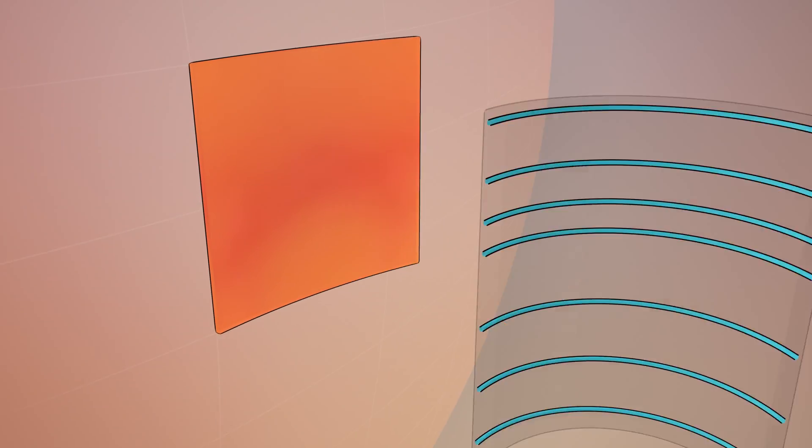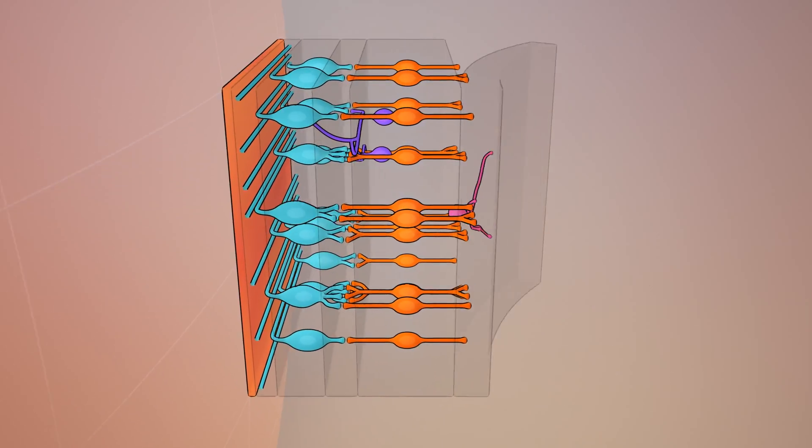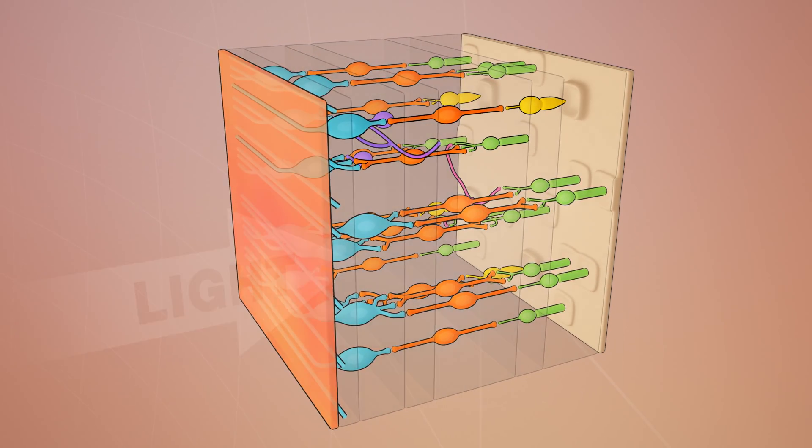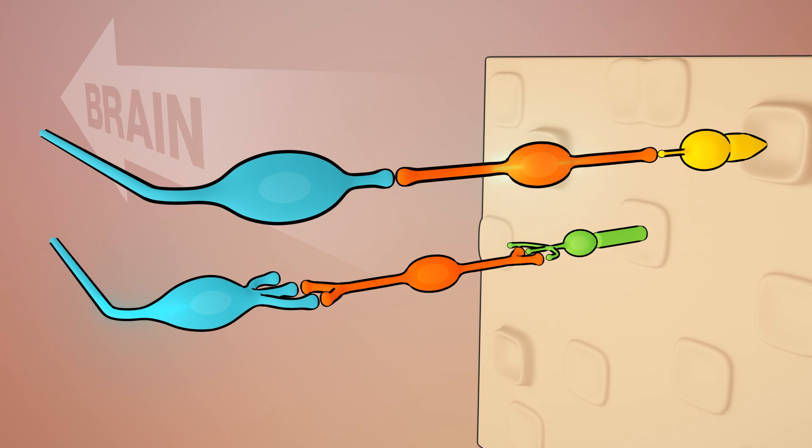The human retina is made of different layers of cells with special neurons that live in the back of the eye called rod and cone photoreceptors. Photoreceptors convert the light coming into your eye into signals that the brain uses to generate vision.